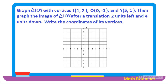We are going to draw the coordinate plane so that we can plot triangle JOY. When x is 1 and y is 2, that is point J. When x is 0 and y is −1, that is point O. And when x is 5 and y is 1, that is point Y.